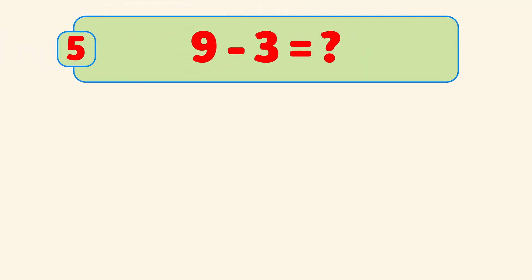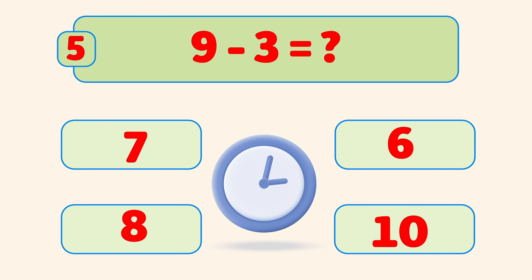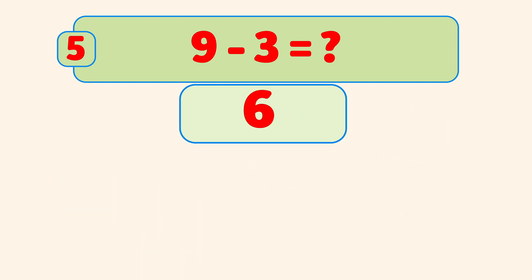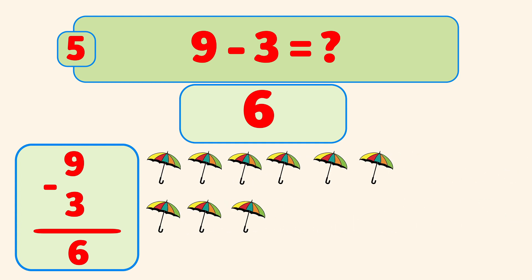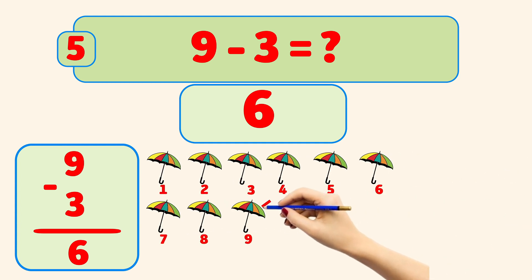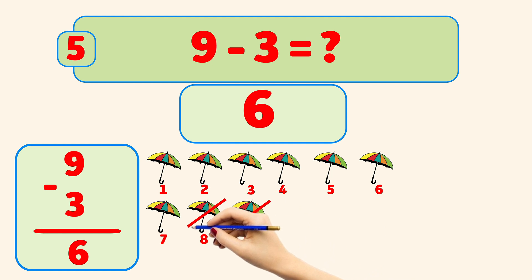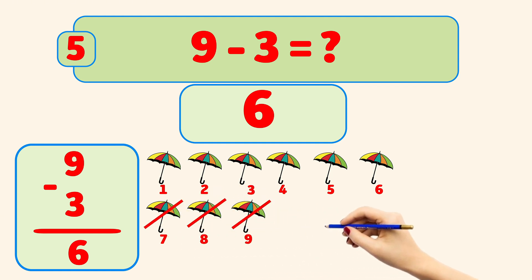What is 9 minus 3? The answer is 6. We start with 9 umbrellas and remove them one by one: 9, 8, 7. Now we have 6 umbrellas left.